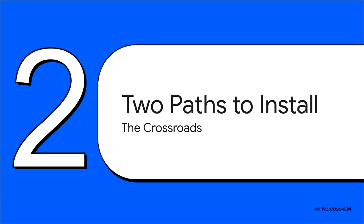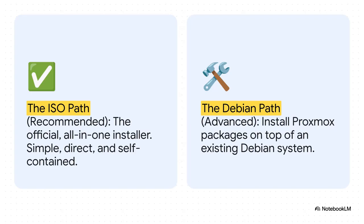Now that we know Proxmox is the whole car — not just the part you add on — let's look at the two main ways you can get this thing up and running. You're at a crossroads. On one side, you've got the ISO path: the official all-in-one way, and spoiler alert, it's what we recommend for just about everyone. On the other side is the Debian path — a much more hands-on, advanced route where you manually add Proxmox to an existing Debian install. Let's dig into each one.